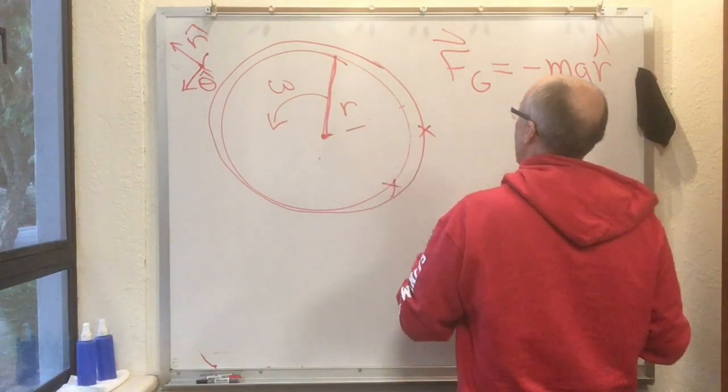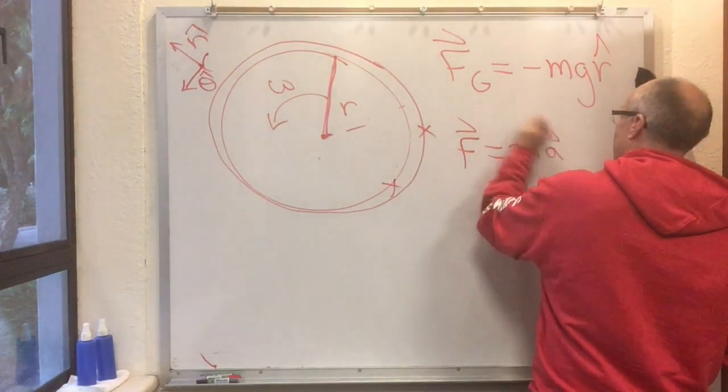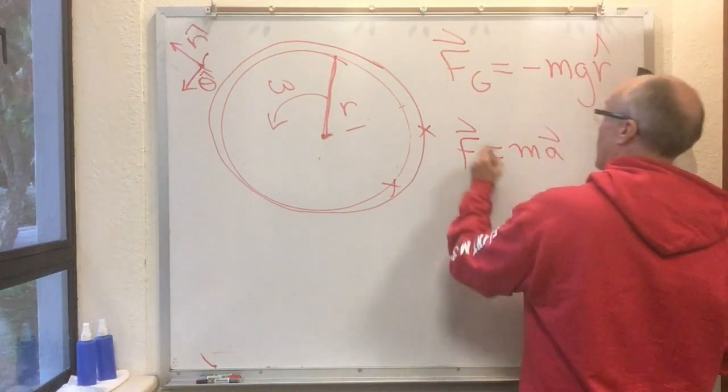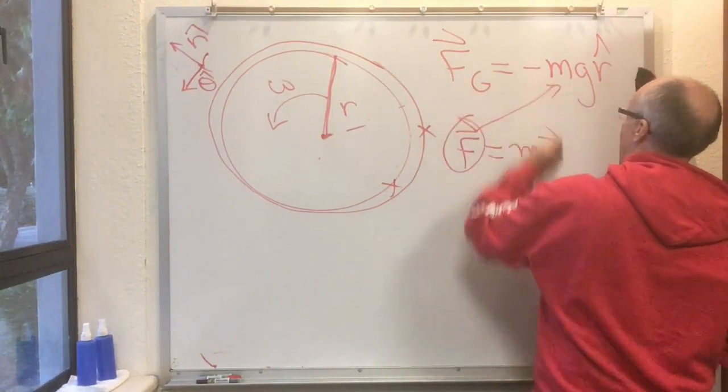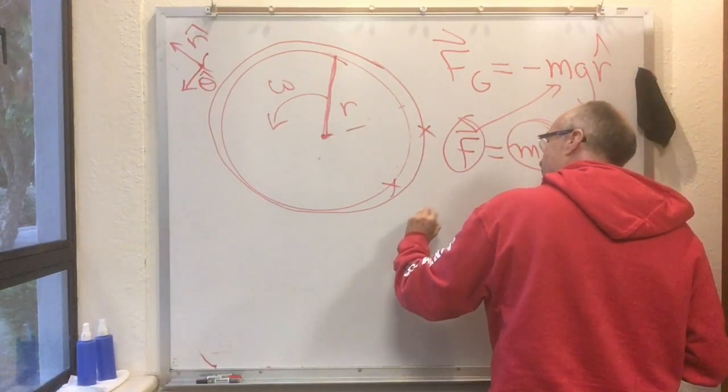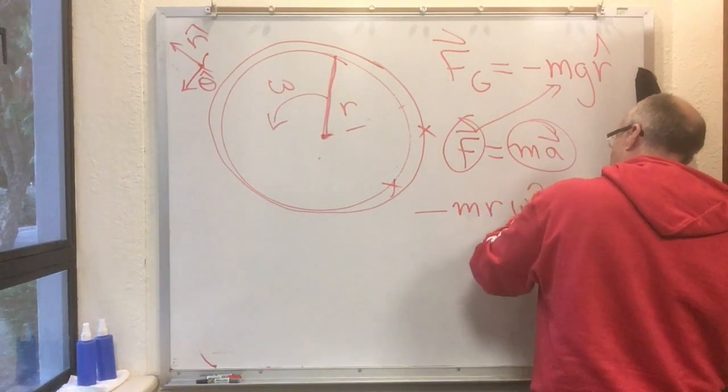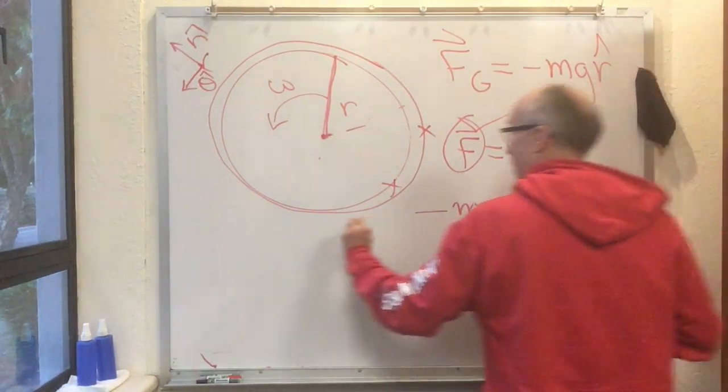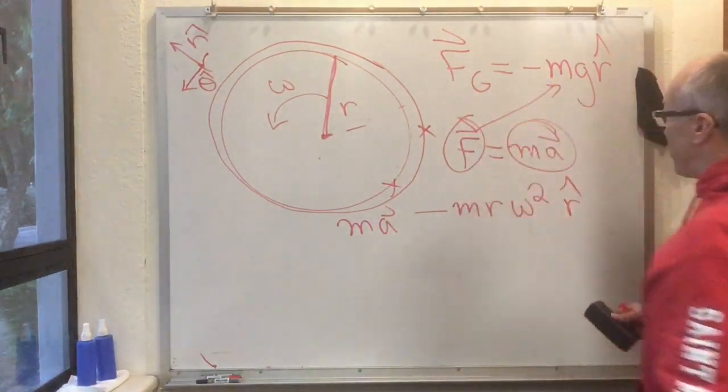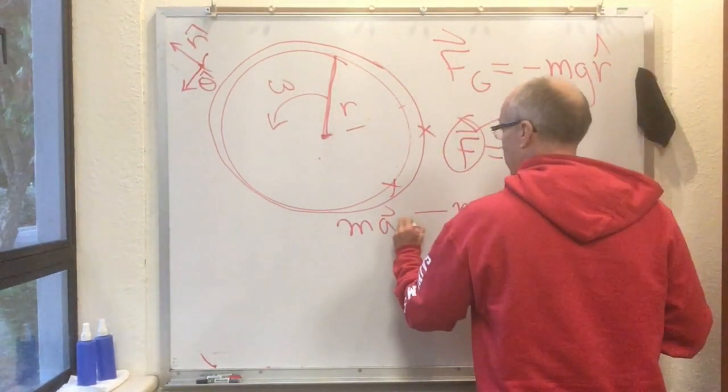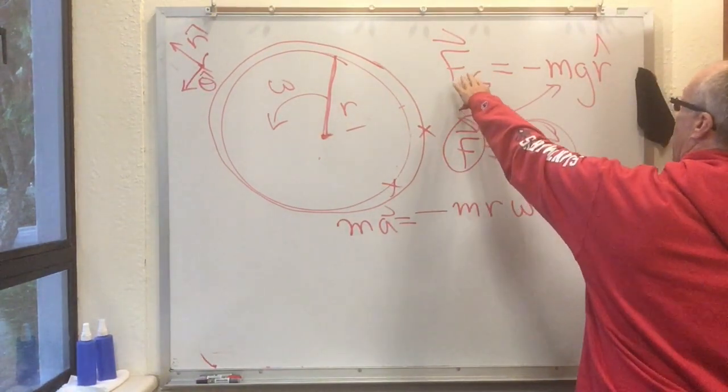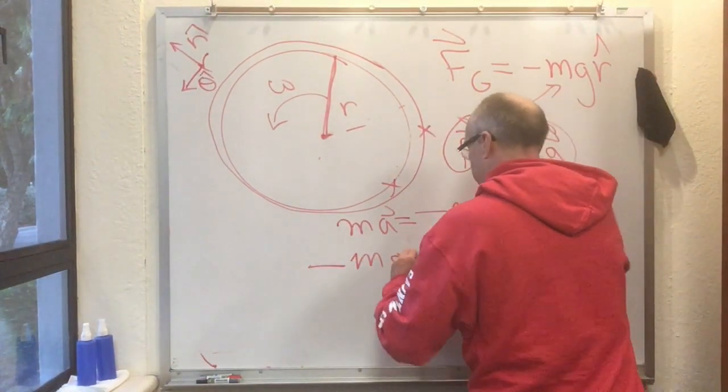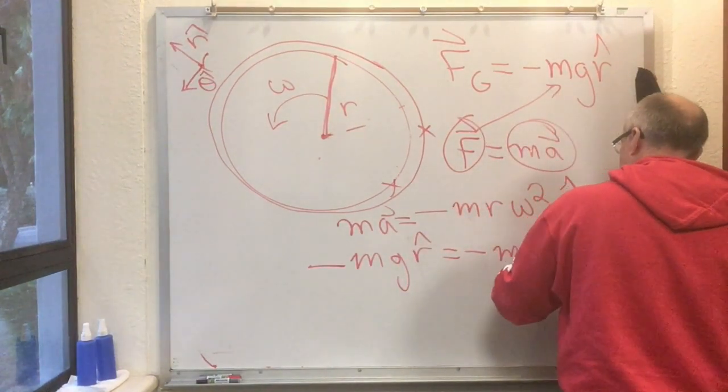Now let's set that equal to what we know as the acceleration, because it's always true that F equals ma, and the only force keeping this thing going in a circle around the Earth is the gravitational force. We know the left-hand side of this equation, F, is that. The right-hand side, ma, is minus m r omega squared times r-hat. So minus mg r-hat equals minus m r omega squared r-hat.